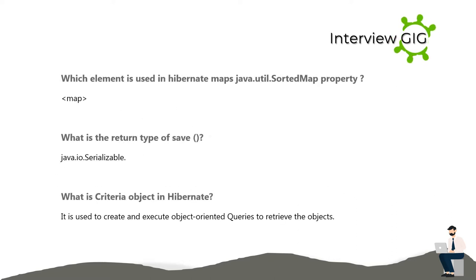Which element is used in Hibernate maps? The java.util.SortedMap property — Map.